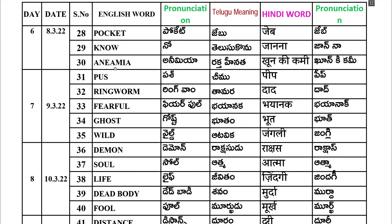30th one: Anemia, A-N-E-M-I-A. Anemia. Telugu: Rakhtahinata. Hindi: Khoon ki kami.